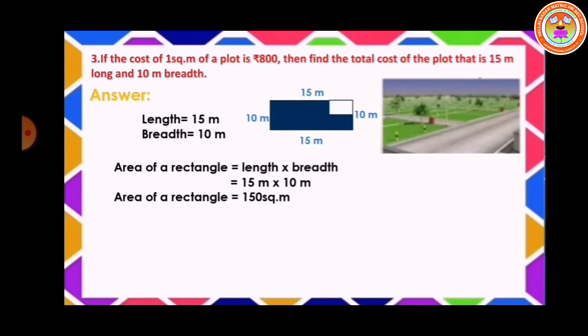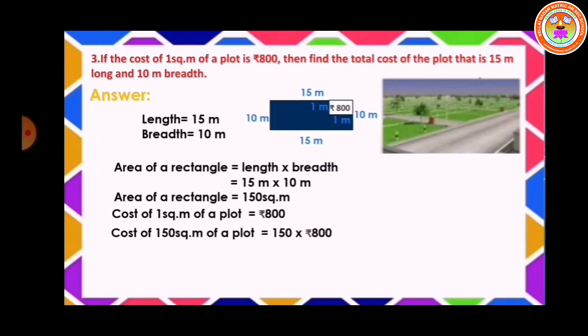Cost of 1 square meter of a plot is Rs. 800. Therefore, cost of 150 square meter of a plot is equal to 150 into Rs. 800, which equals Rs. 1,20,000. Hence the total cost of the 150 square meter plot is Rs. 1,20,000.